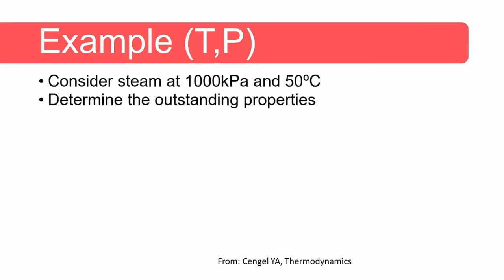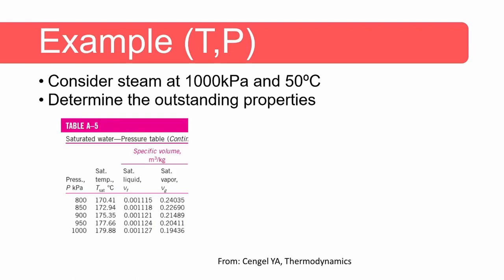Let's do another example. Consider steam at 1000 kilopascal and 50 degrees Celsius. Determine the outstanding properties — first we need to determine the phase. On the saturated water pressure table, the saturation temperature of water at 1000 kilopascal is 179.88 degrees Celsius. From the saturated water temperature table we can find that the saturation pressure of water at 50 degrees Celsius is 12.35 kilopascal.